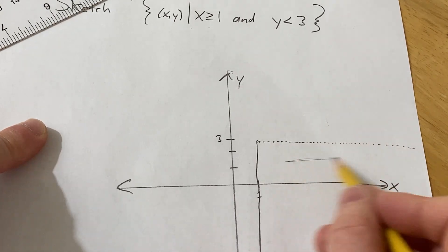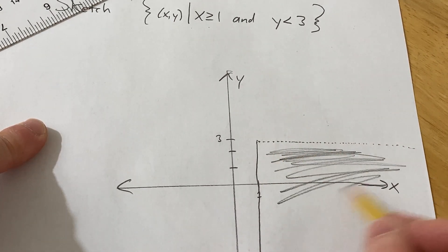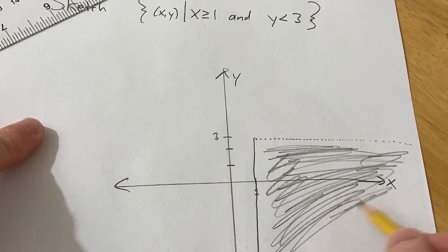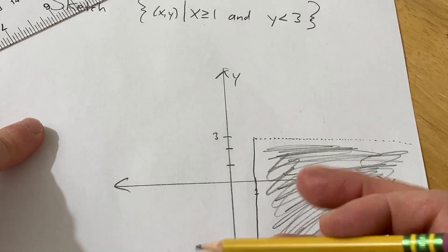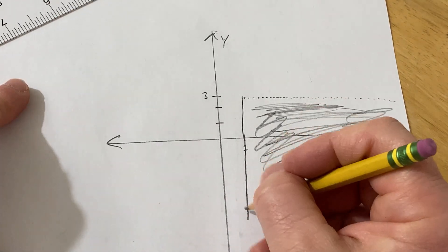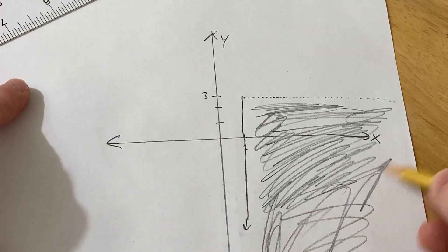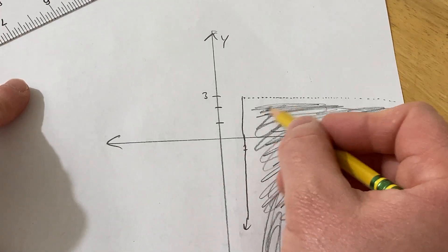And it's going to be everything over here in this region. I could have done this in steps, I could have drawn two pictures and then found the intersection of the pictures. And this goes down forever. So this is infinite, we have an infinite plane region.